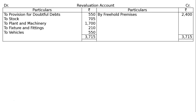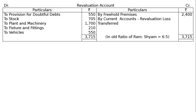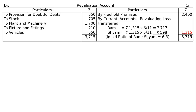The totalling on the debit side is Rs. 3,715. Deducting the credit of Rs. 2,400, the revaluation loss is Rs. 1,315, transferred by current accounts. In the old ratio of Ram to Siam of 6 to 5: Ram's share is 1,315 multiplied by 6/11 = Rs. 717, and Siam's share is 1,315 multiplied by 5/11 = Rs. 598. This loss is transferred to capital accounts on the debit side.